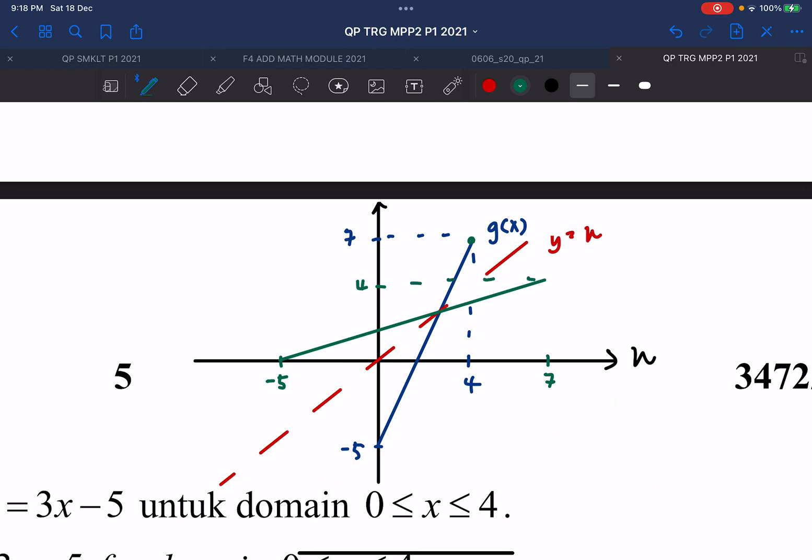So this will be the G inverse graph. That's all. For graph sketching, you'll get 2 marks, 1 mark for the Gx graph, 1 mark for the G inverse graph.